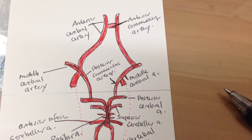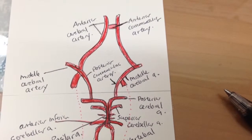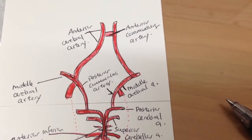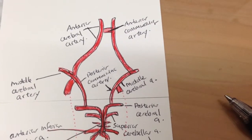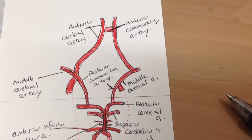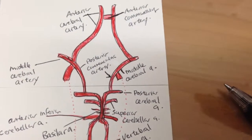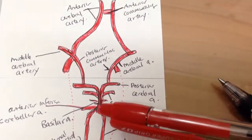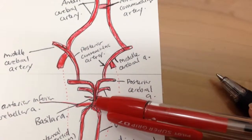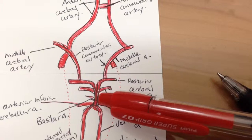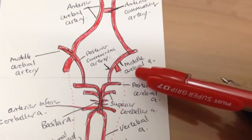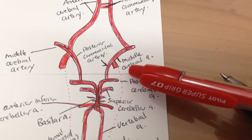What parts of the circle of Willis do not belong to the circle of Willis? The basilar artery is not part of the circle of Willis and neither are the middle cerebral arteries, and of course the vertebral arteries are not.